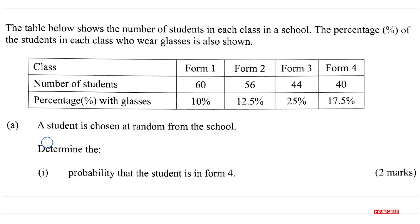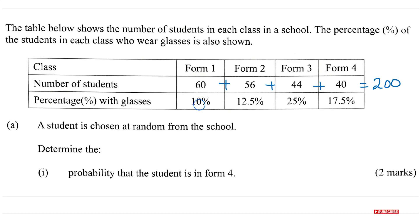We are asked, if a student is chosen at random, what is the probability that the student is in Form 4? Before we calculate probabilities, we want to add all the number of students. If you add all these up, you get 200, so there are 200 students altogether. Now out of those 200 students, 10% of 60 are wearing glasses in Form 1. 10% of 60 is just 6, so there are 6 students here who are wearing glasses.